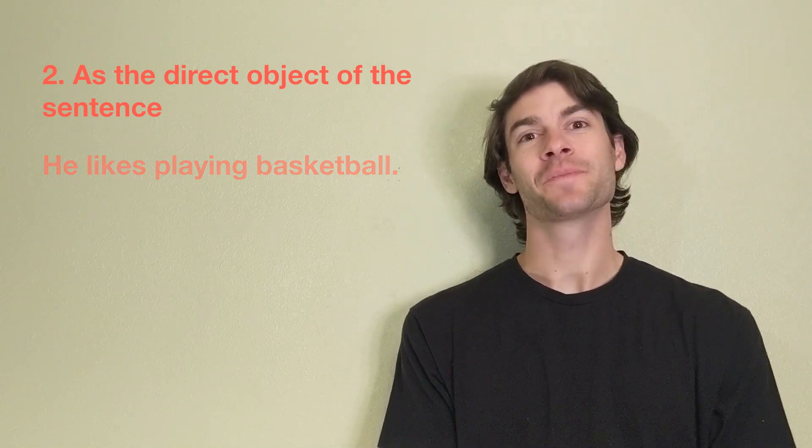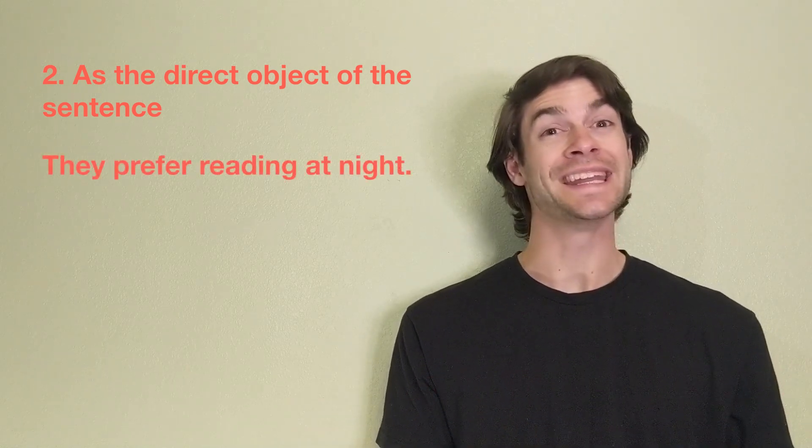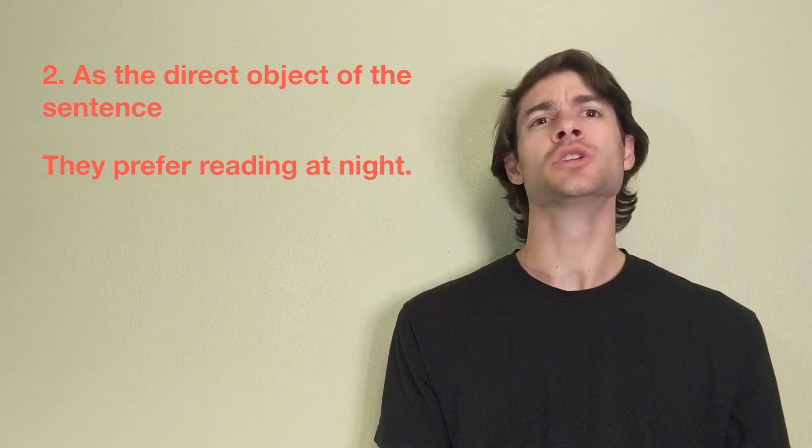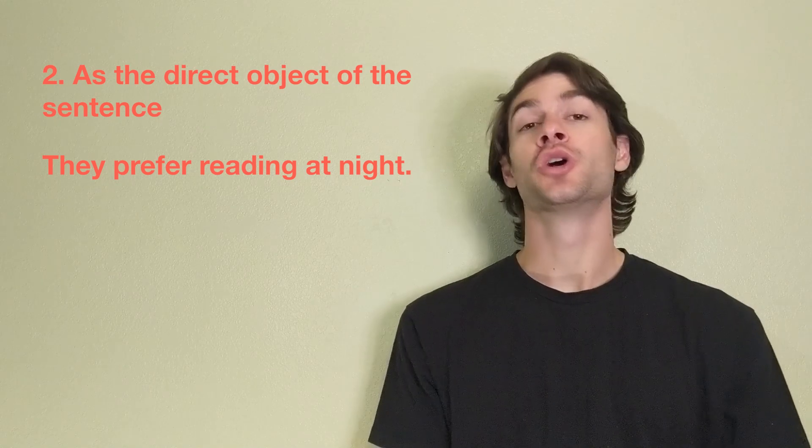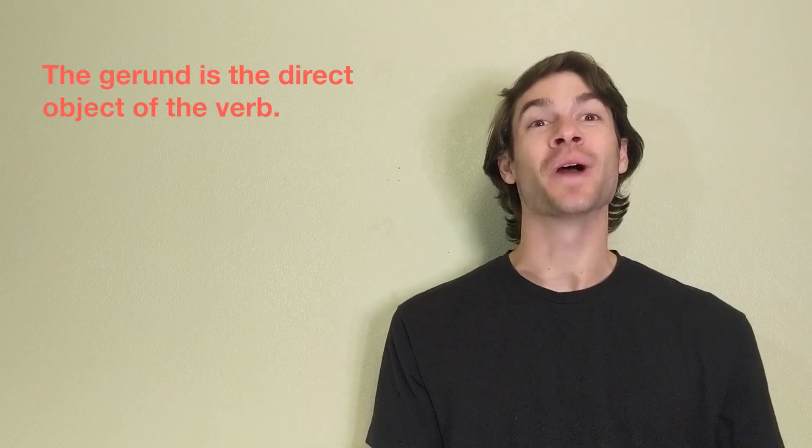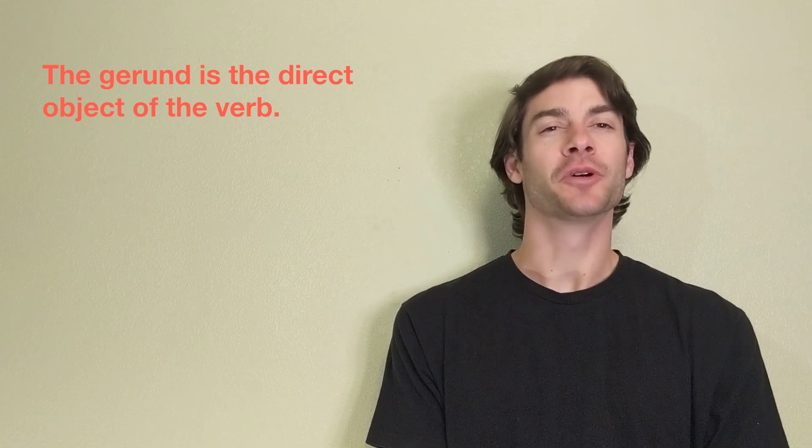As another example, in the sentence, they prefer reading at night, we can ask, what do they prefer? They prefer reading. In both of these examples, the gerund is the direct object of the verb.